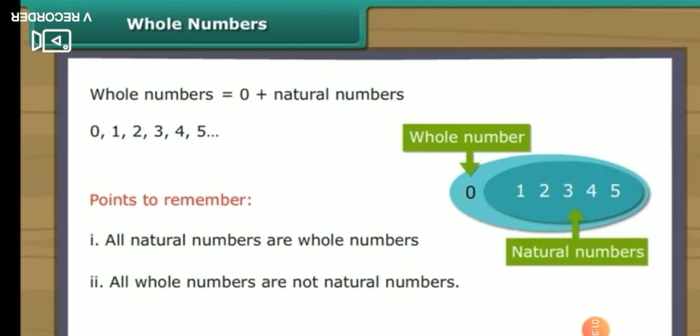You have to remember that all natural numbers are whole numbers, because whole numbers include all natural numbers. For example, 0, 1, 2, 3, 4, 5 — here 1, 2, 3, 4, 5 are natural numbers. Therefore, all natural numbers are whole numbers. But all whole numbers are not natural numbers.